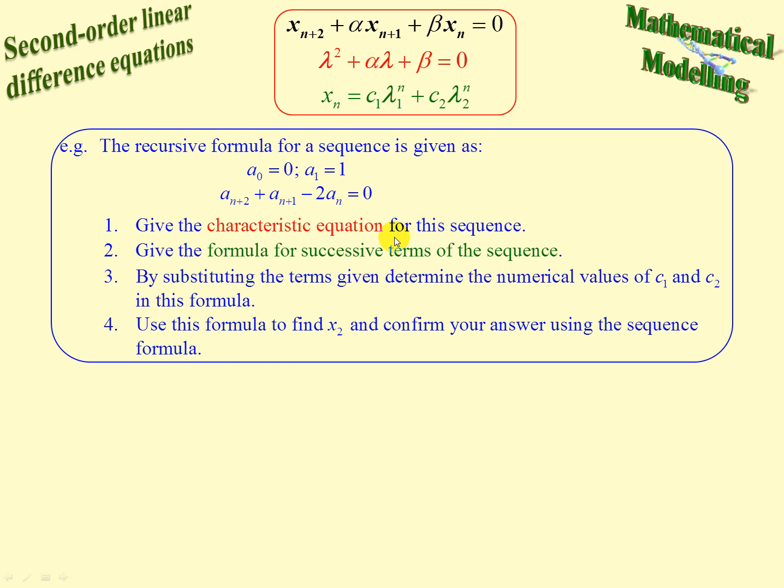Now the questions: Give the characteristic equation for the sequence. Give the formula for successive terms of the sequence. We're going to use the characteristic equation to find the value of lambda. By substituting terms given, determine the numerical values of C1 and C2. We know that a sub 0 is 0 and a sub 1 is 1, so we'll substitute them into our formula and end up with simultaneous equations to solve for C1 and C2. We'll then substitute those back into the formula and use it to find x sub 2.